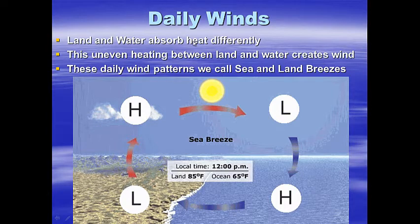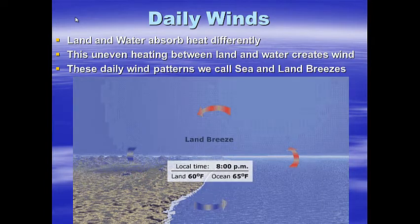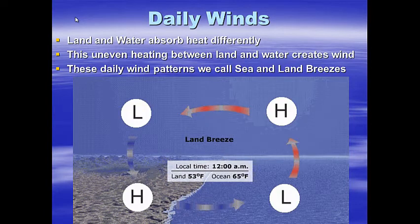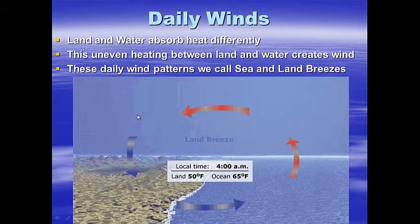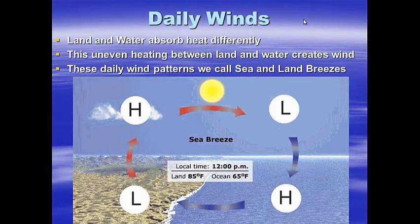Daily winds. Land and water absorb heat differently. This uneven heating between land and water creates wind. Whenever air rises, we get low pressure. When air sinks, we get high pressure. These daily wind patterns — sea and land breezes — exist between the water and the continents.